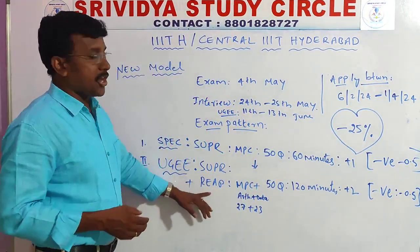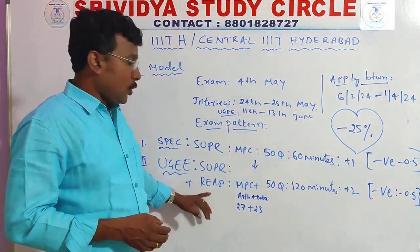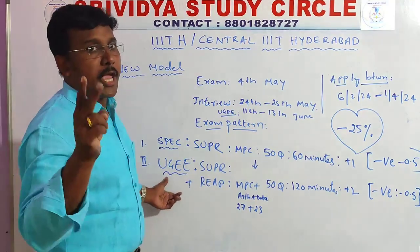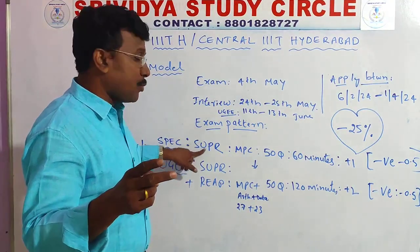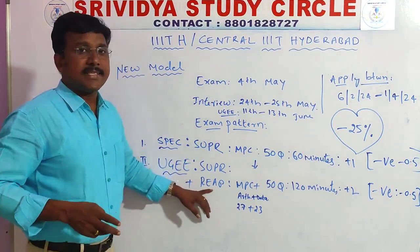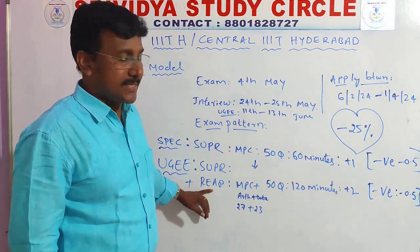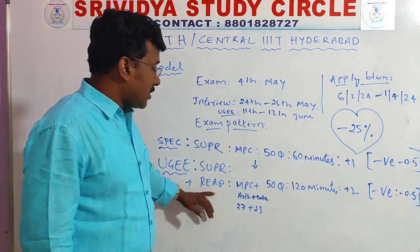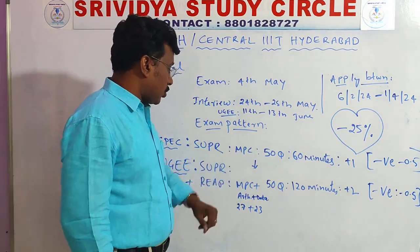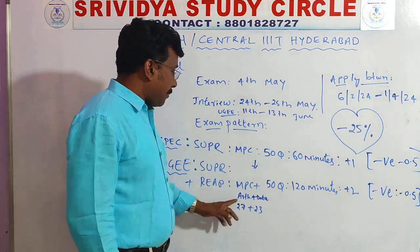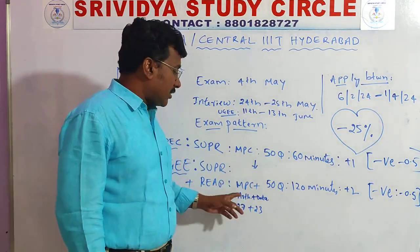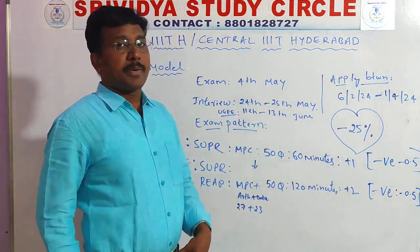UGE exam — SUPR and REAP. For UGE exam, two papers have to be written: SUPR and REAP. REAP stands for Research Aptitude Test. The syllabus differs: SUPR is MPC only, but REAP covers arithmetic and data interpretation, and arithmetic and algebra.